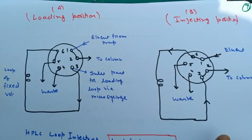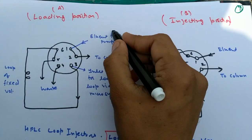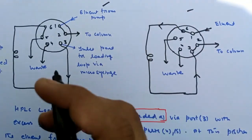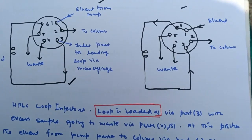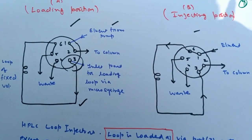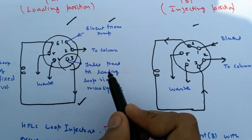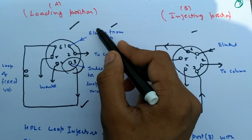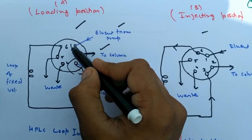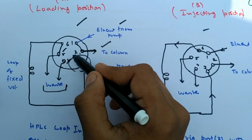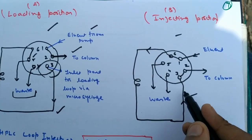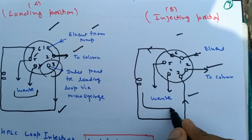The piston positions include loading position and injecting position. For the HPLC loop injector: in the loading state, the setting must be on the loading position. We inject the sample through port number 3 using a syringe. From port 1, the solvent is pumped and sent to port 2 and then to the column. Excess solvent drains into a waste container through ports 5 and 6. In the injecting position, the event flow goes from port 1 to 6, then 3 to 2 to the column, while ports 5 and 4 contain excess solvent as waste.